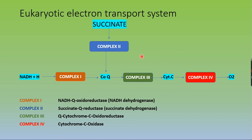The electron flow through Complexes I, III, and IV is accompanied by proton flow. Protons move from the mitochondrial matrix — which becomes negatively charged — to the intermembrane space (cytosolic side), which becomes positively charged. The exact number of protons moved per pair of electrons is uncertain, but current understanding is that at least 10 protons move outward during NADH oxidation.